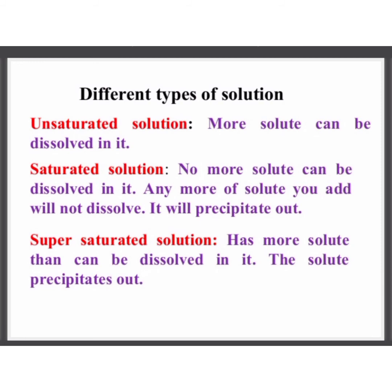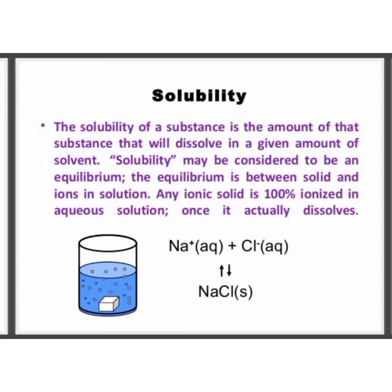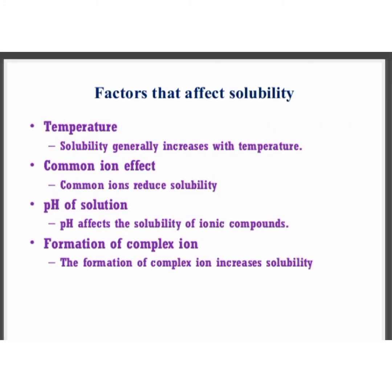There are three types of solutions. A solution in which more solute can be dissolved is termed an unsaturated solution. A supersaturated solution has more solute than can be dissolved, and the solute precipitates out. The solubility of a substance is the amount that will dissolve in a given amount of solvent. Solubility may be considered an equilibrium between the solid and ions in solution. The factors affecting solubility are temperature, common ion effect, pH of the solution, and formation of complex ions.